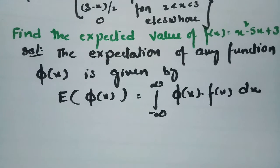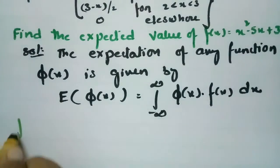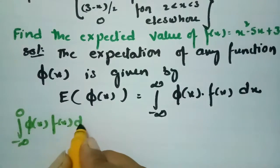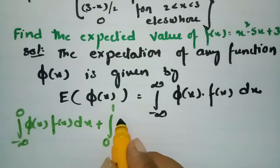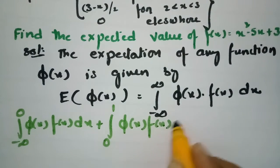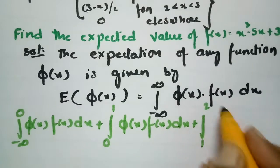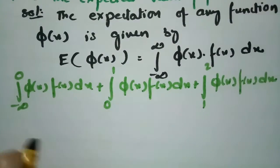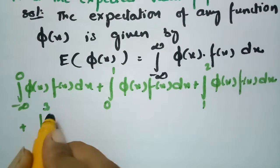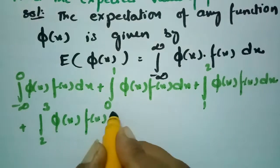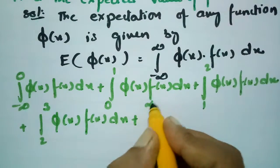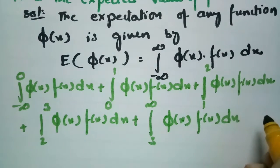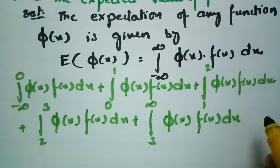We split the integral into five parts: from minus infinity to 0, plus 0 to 1, plus 1 to 2, plus 2 to 3, and plus 3 to infinity — each of φ(x) · f(x) dx. Now we substitute the appropriate f(x) value in each interval.